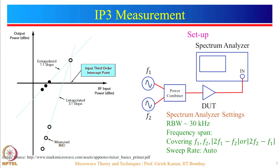For IP3 measurement, two tones are applied at the input of the DUT through a power combiner. The third order intermodulation products, which are 2F1−F2 or 2F2−F1, are present at the DUT output. The power combiner should provide very high isolation between the two input ports and also have a very high return loss for F1 and F2.